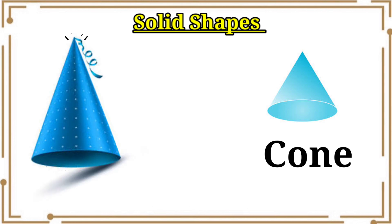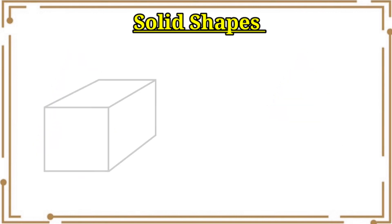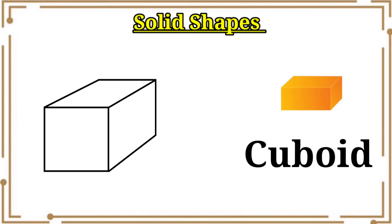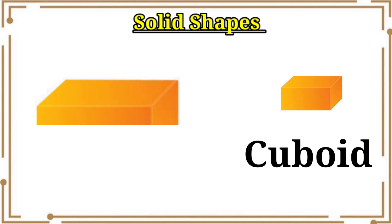Let's see the next object. Here, one box. Let's think, which shape is this box? It is in cuboid shape. So we need to color it in orange.